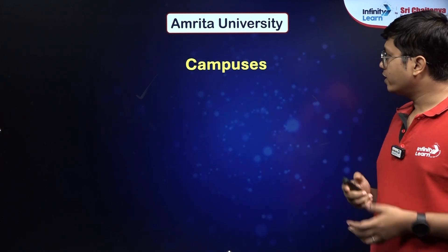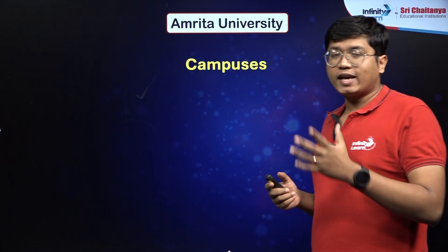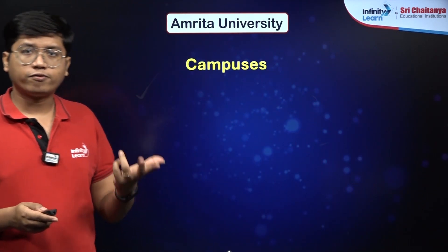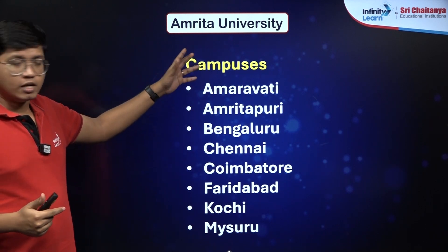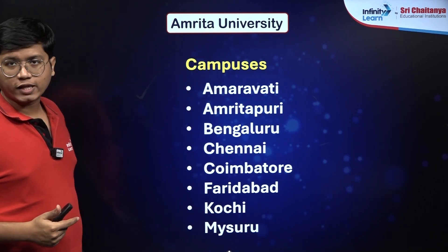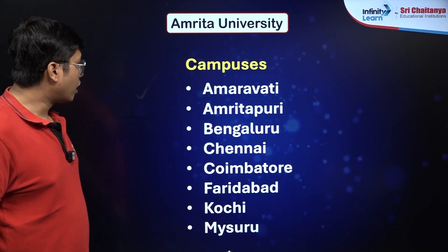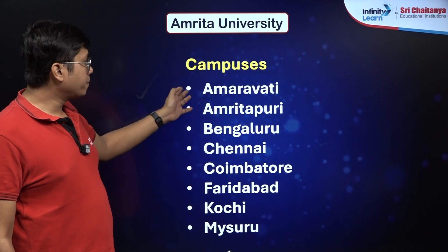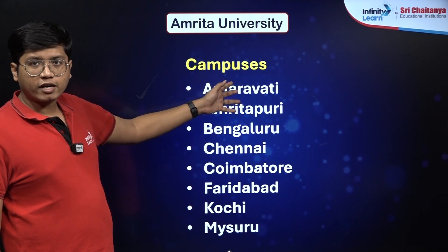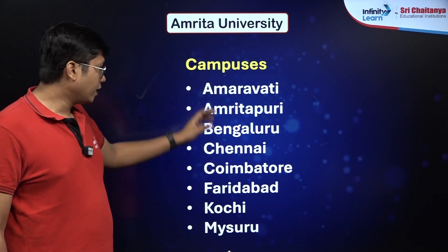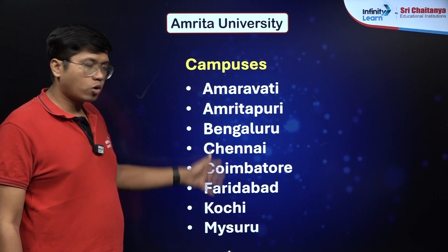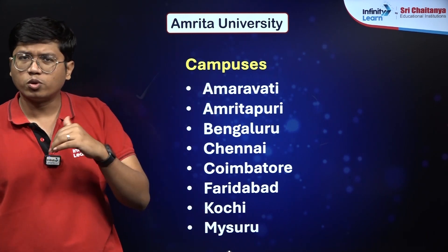Amrita University has multiple campuses. Most of them are in the southern part of India. Here is a list of all the locations for all the campuses. Amravati is in Maharashtra and you would have Faridabad in Haryana.